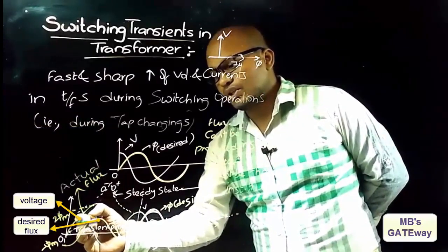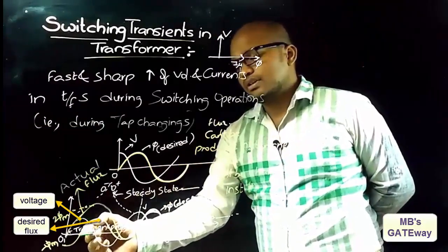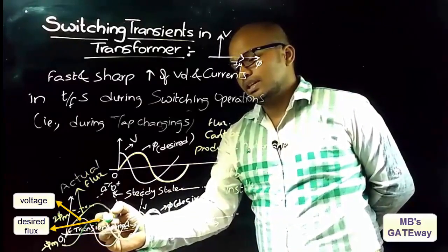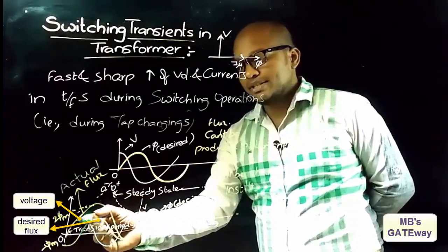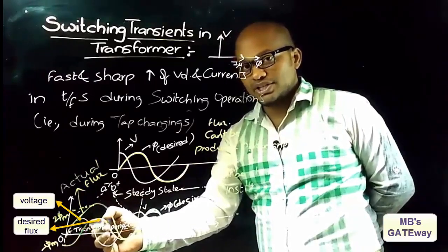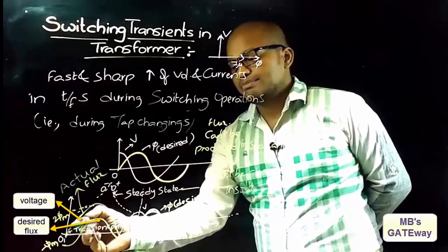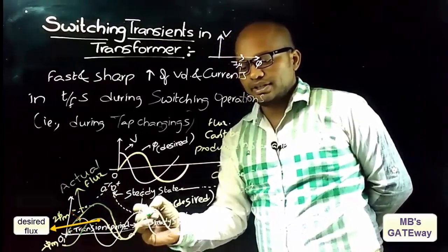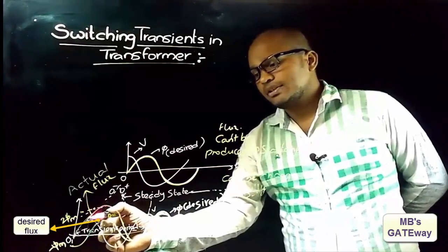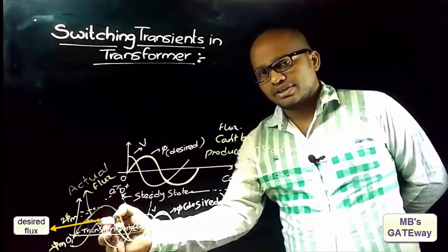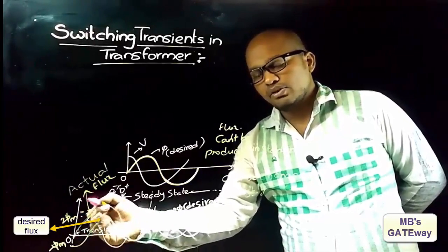Now observe the transient period if the switching action takes place at the maximum value of voltage. Flux cannot be produced instantaneously, so for maximum voltage the flux will start building up following the desired flux waveform. In the transient period the flux value is φm if the switching operation takes place at maximum voltage. But if the switching operation takes place at the zero instant, the flux takes a different path and upon reaching steady state it overlaps with the desired waveform, reaching a maximum value of 2φm.